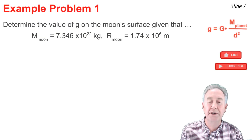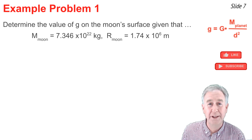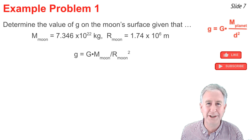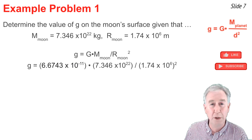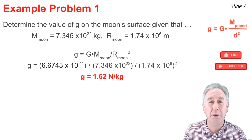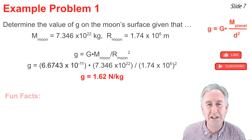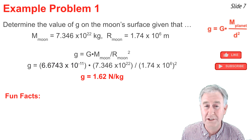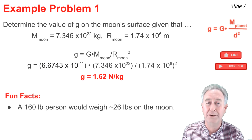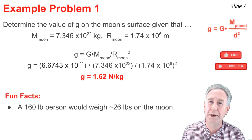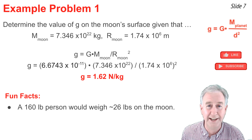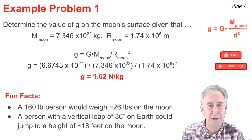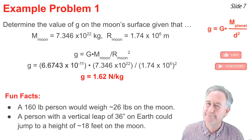Here's the first practice problem: determine the value of g on the surface of the moon, given the moon's mass and radius. Substituting those values into the equation gives g ≈ 1.62 N/kg. This leads to some interesting facts: a person who weighs 160 pounds on Earth would weigh only 26 pounds on the moon, and someone who can jump 3 feet high on Earth would rise 18 feet on the moon.